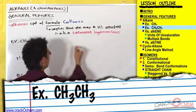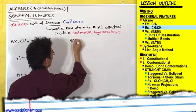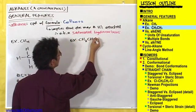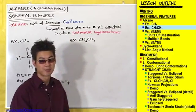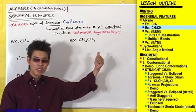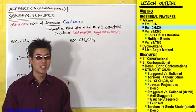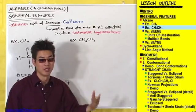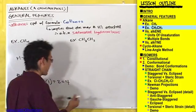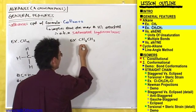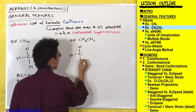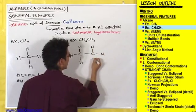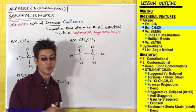Let's take for example CH3-CH3. Does anybody know what this is going to be called? Ethane. Methane is one carbon, ethane is two carbons. Ethane is going to have one CH3, another CH3, just like that.